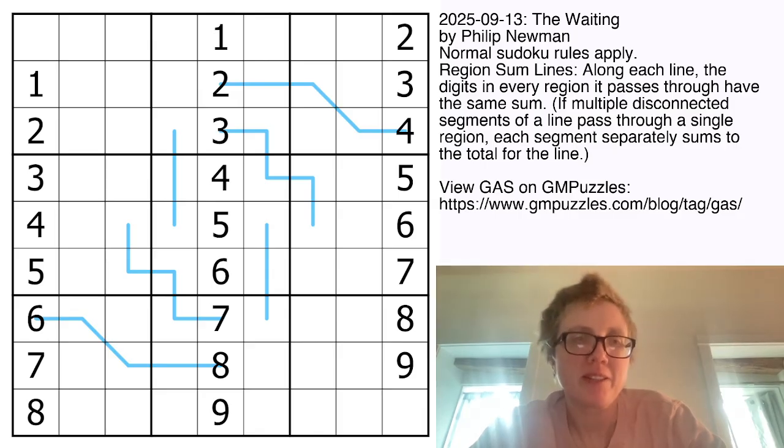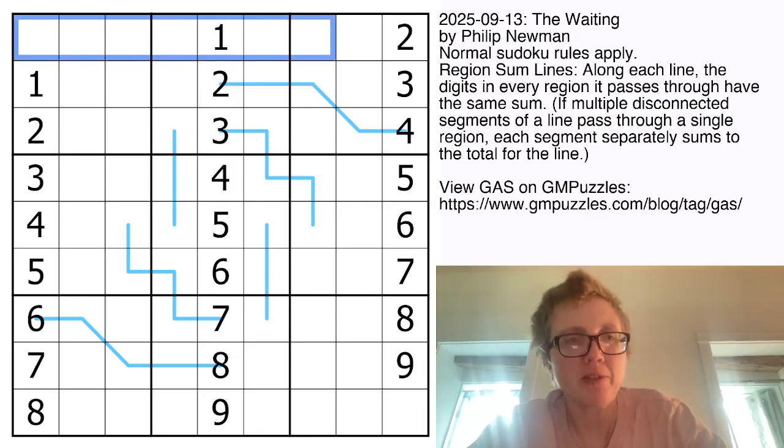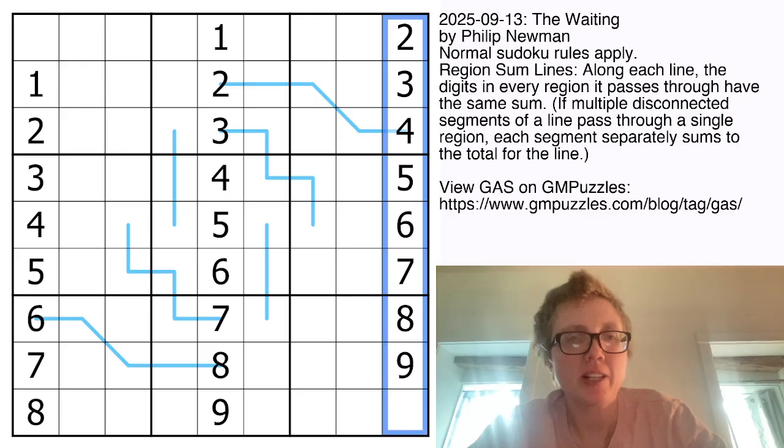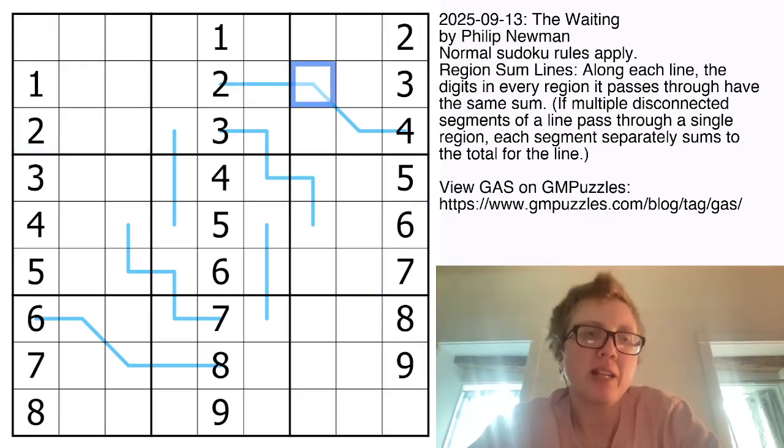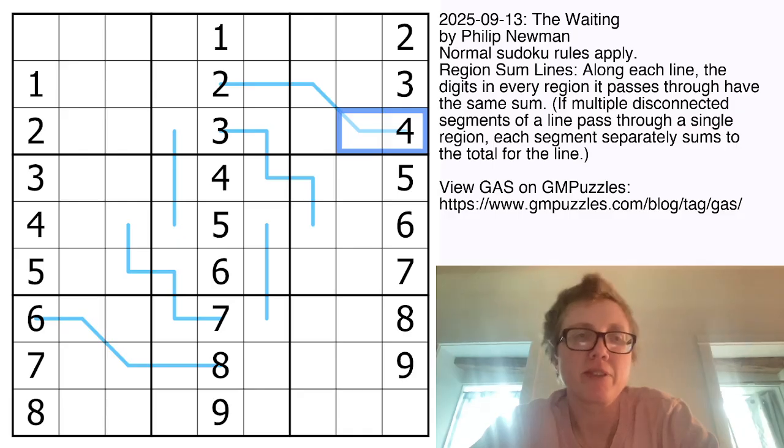This is a region-sum-line Sudoku. That means we have normal Sudoku rules, so we're placing the digits 1 through 9, once each in each row, each column, and each outlined 3x3 region.